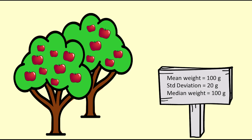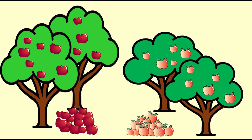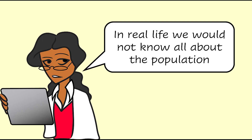In that video we looked at samples of apples from a theoretical population of red apples in an orchard with a mean weight of 100 grams and a standard deviation of 20 grams. Now we will have samples taken from two different populations — we will look at two varieties of apple. Note that the data in the following graphs is made up or simulated to show different effects that would happen in a real situation.